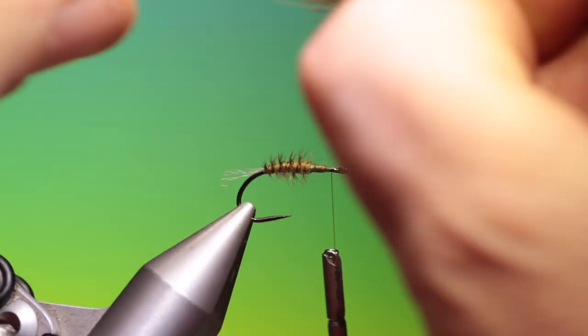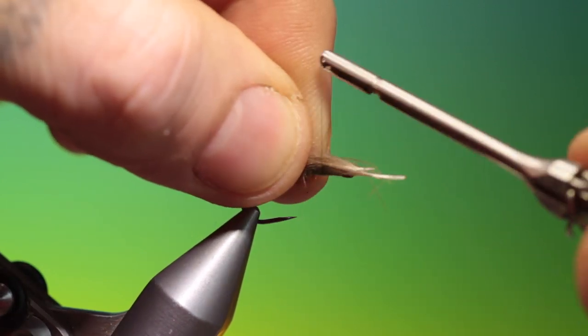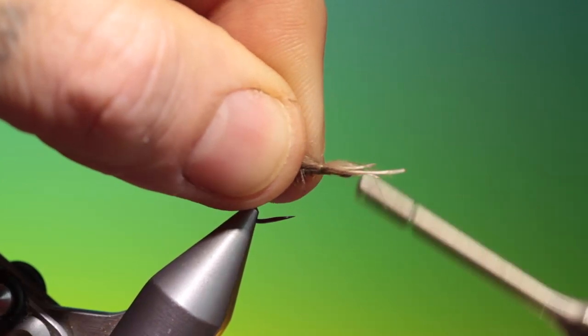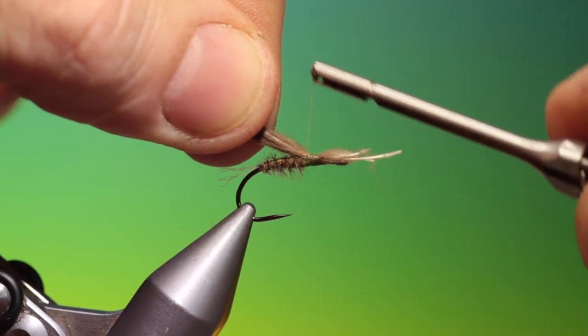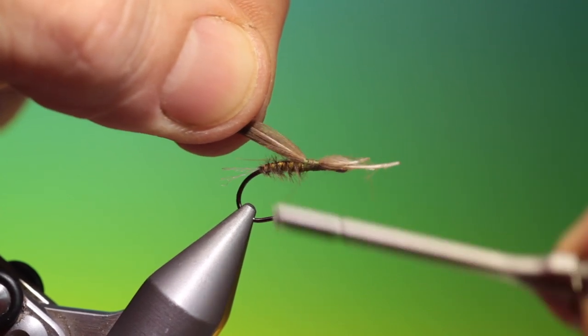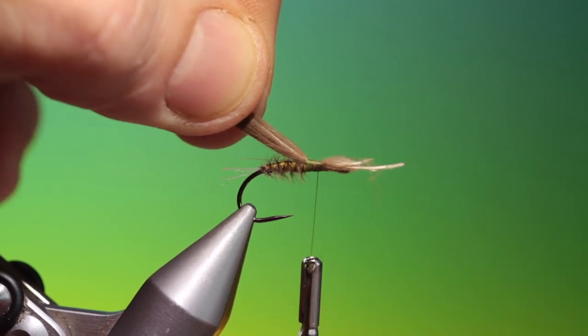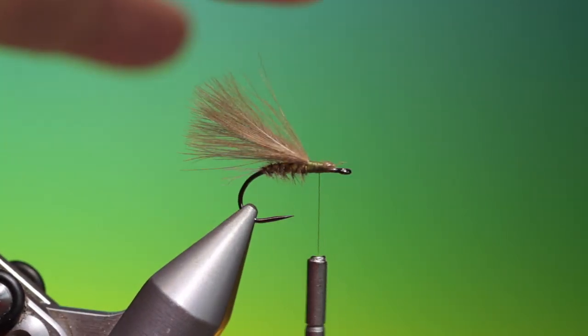I've lined up three CDC hackles natural, so what we'll do here is we just go a little ways back and tuck these in on top and go back to the thorax there and then we can trim off the surplus.